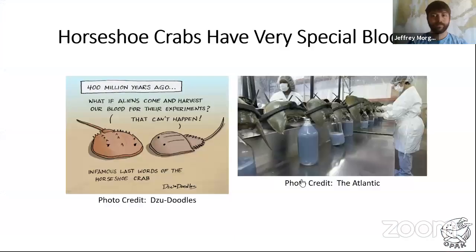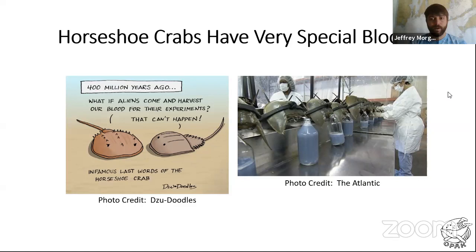One of the really cool things about horseshoe crabs — which is very relevant right now in our current times — is their blood. It is blue, and that's because of the copper in it instead of iron like our blood. If you've been to the doctor's office, you are thankful for horseshoe crabs. Let's watch a short video about why horseshoe crab blood is so important to us.